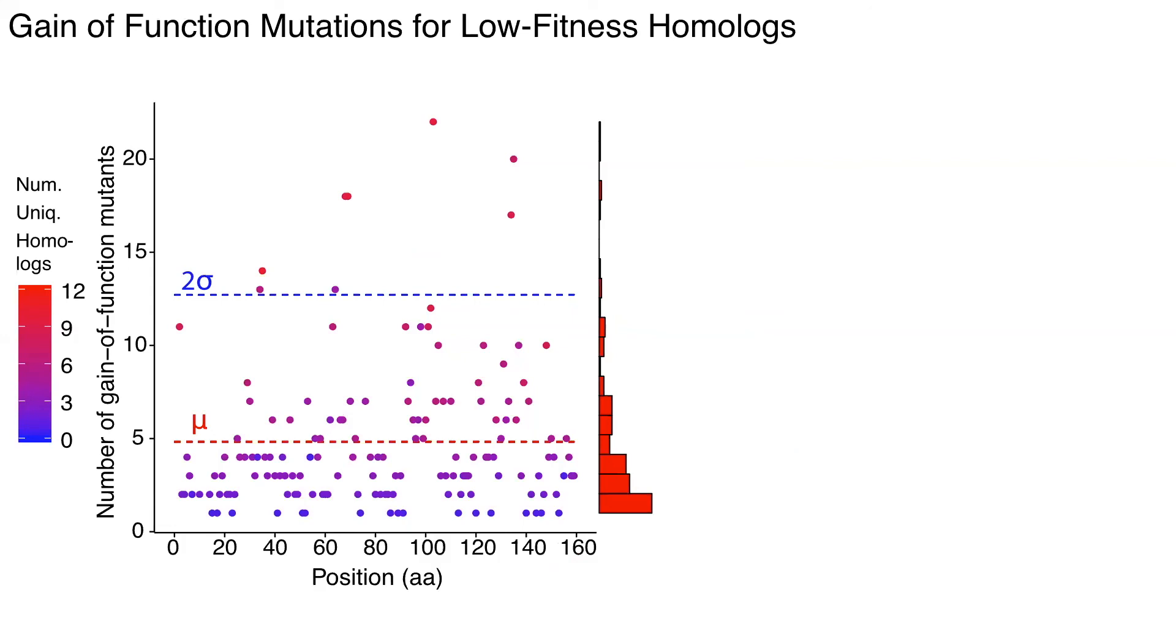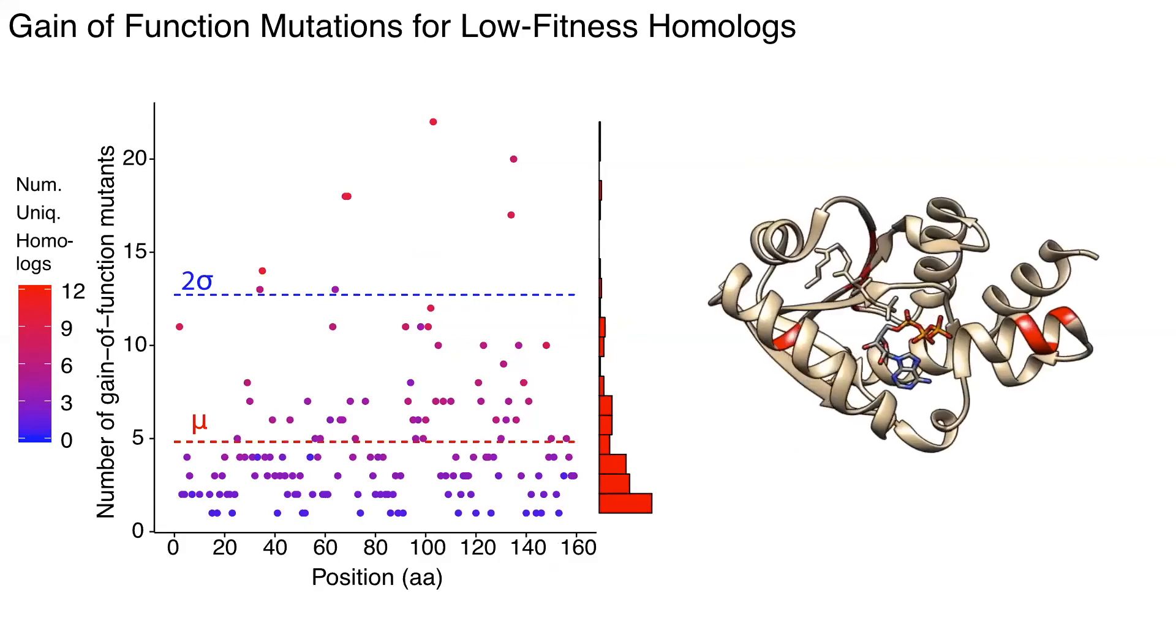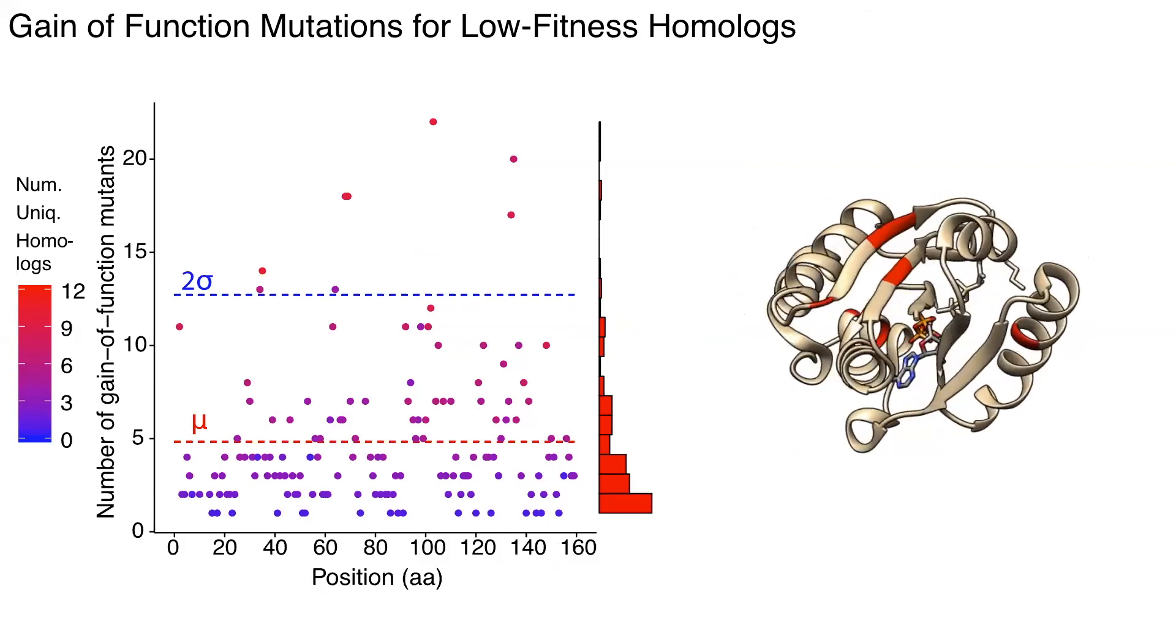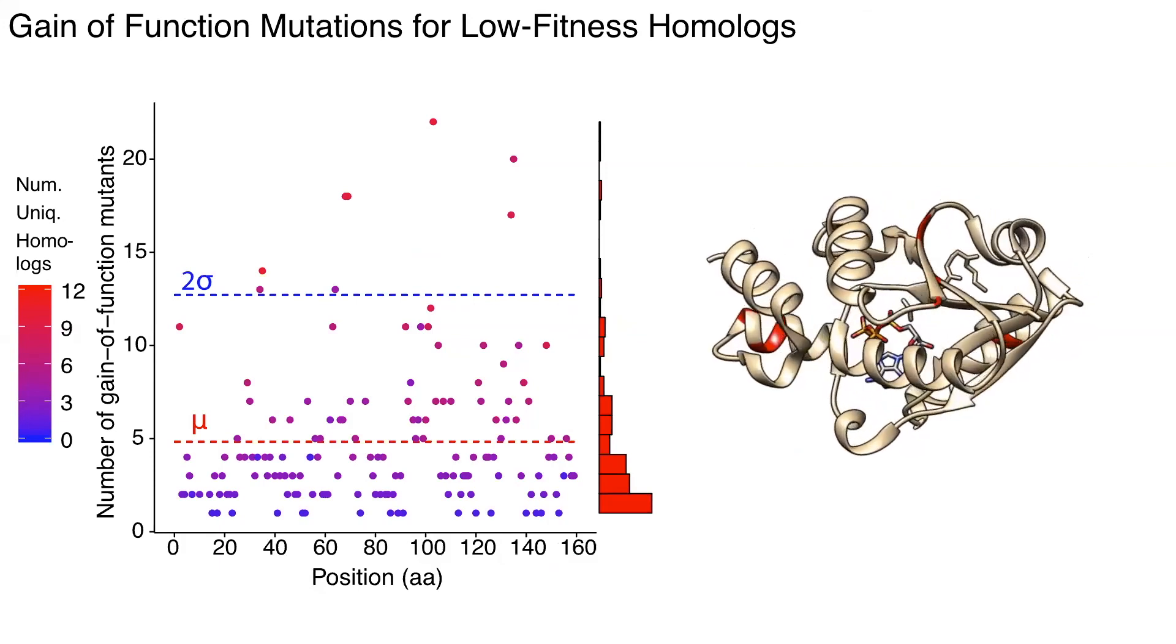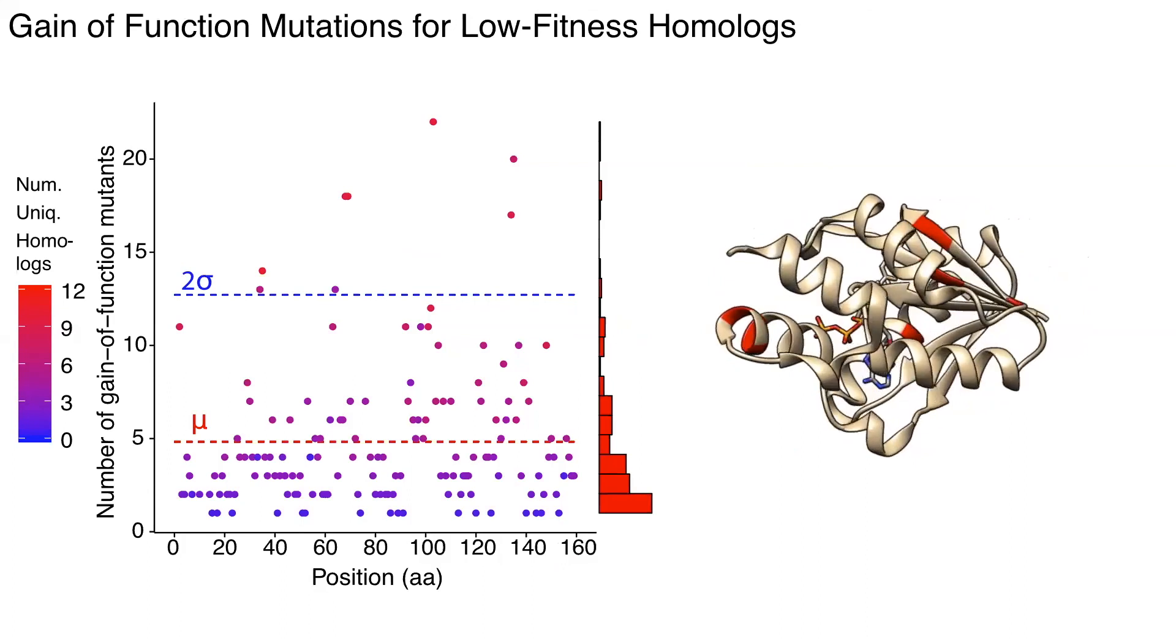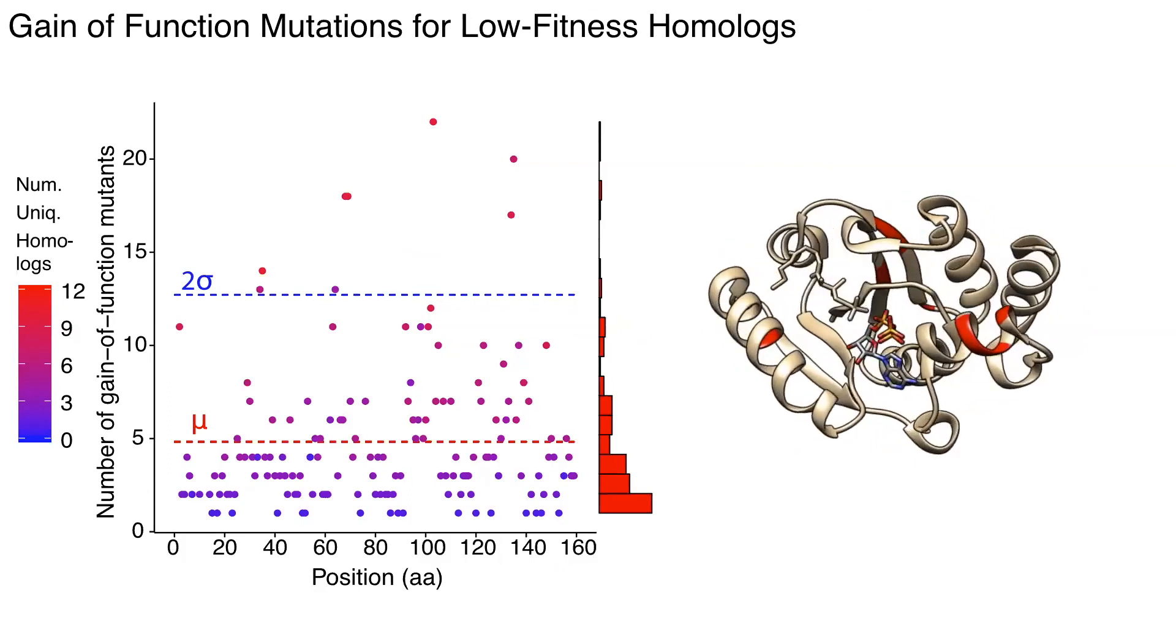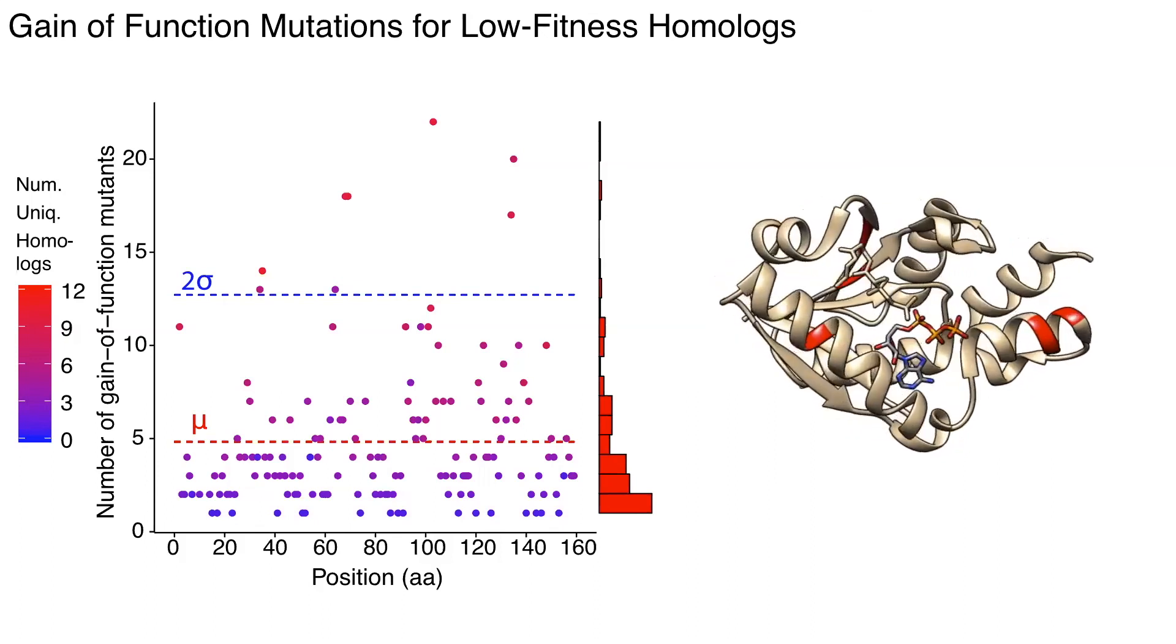We saw gain of function mutations actually clustered at eight positions along the surface of the protein, and it turns out that those mutations actually clustered if you project them onto the structure, including in distant beta strands, which kind of pointed to an actual functional interpretation of this.